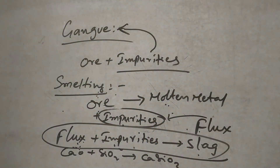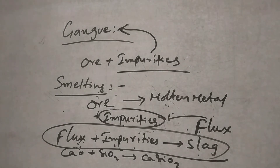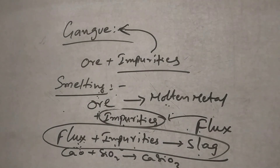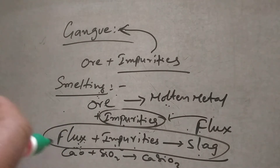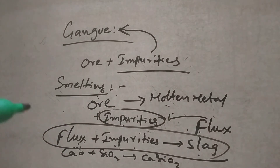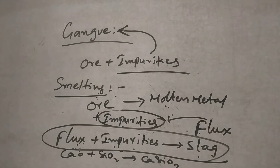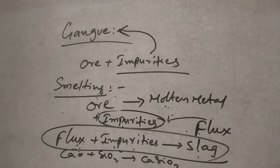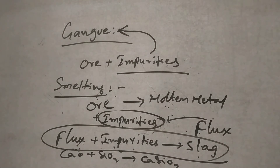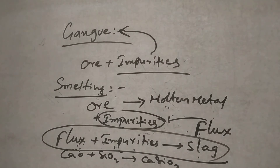So, even the terminologies are very very important. Like that, we studied about calcination, roasting, gangue, smelting, and flux. These terminologies are very very important. In the next video, I will explain about extraction of crude metal from ore — any type of metals, any type of methods, next class.